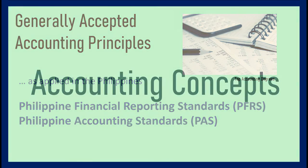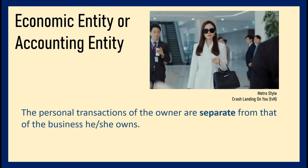The first concept is the Economic Entity or Accounting Entity principle. In this concept, the personal transactions of the owner are separate from those of the business he or she owns. For example, when the owner spends money on a birthday party for his child using personal money, that is not a business transaction. Anything happening in the business is not related to what happens personally to the owner.